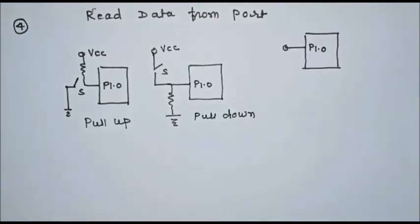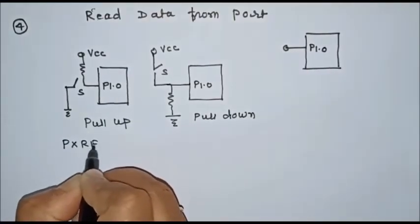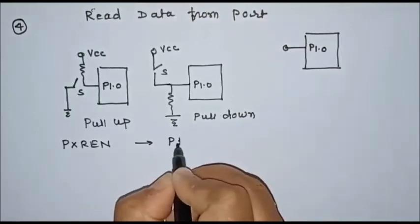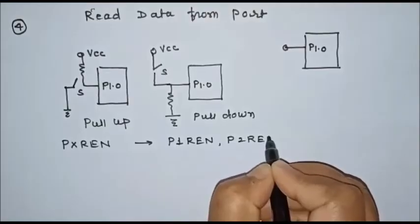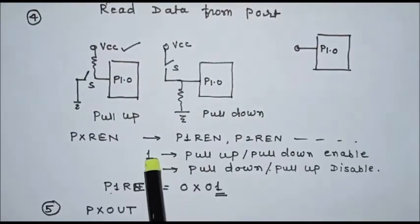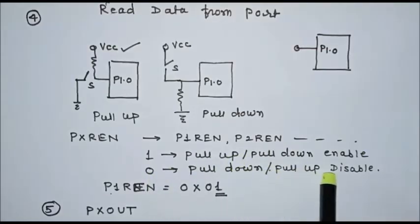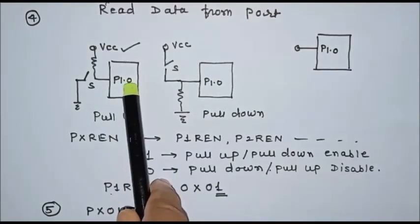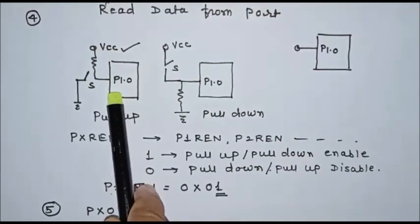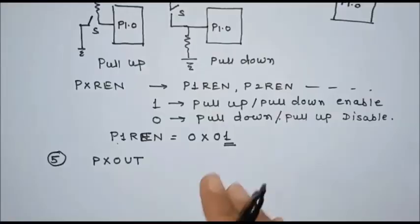In the MSP430, the user can select pull-up or pull-down configuration using the PxREN register. One register is available per port — P1REN for port 1, P2REN for port 2, and so on. If a particular bit is 1, the pull-up or pull-down configuration is enabled for that pin; if the bit is 0, it is disabled. To enable the configuration for P1.0 as an input pin, initialize P1REN with 0x01 — the 1 indicates configuration is enabled for P1.0.